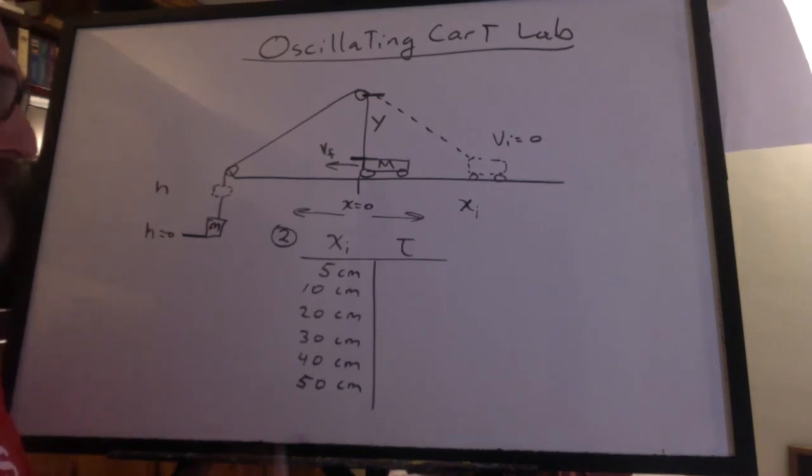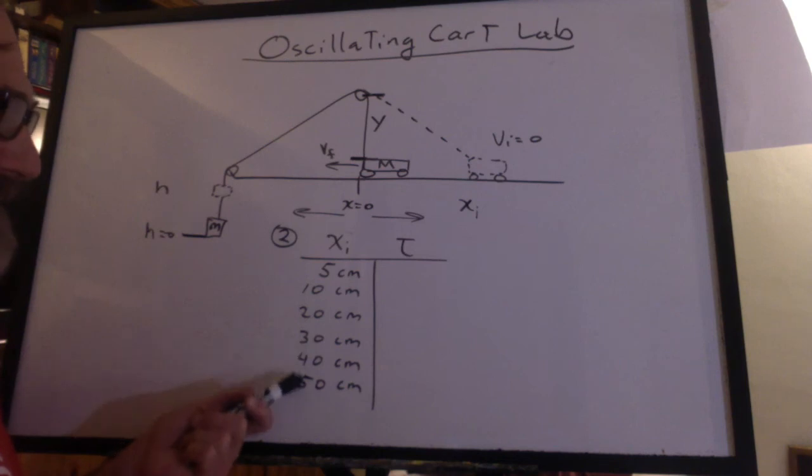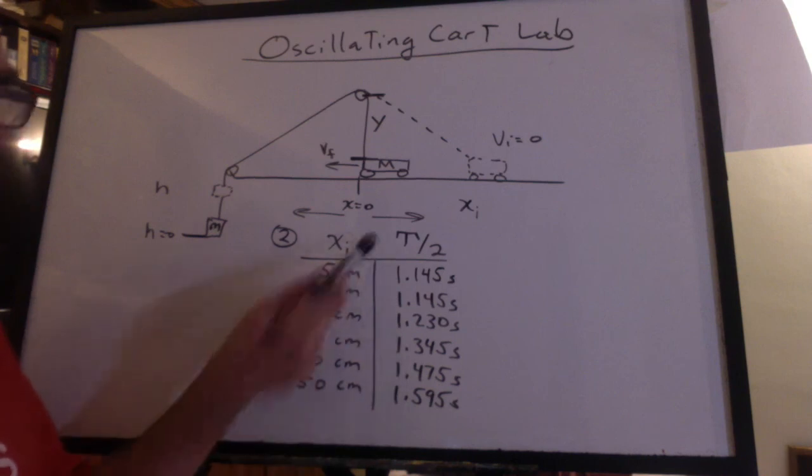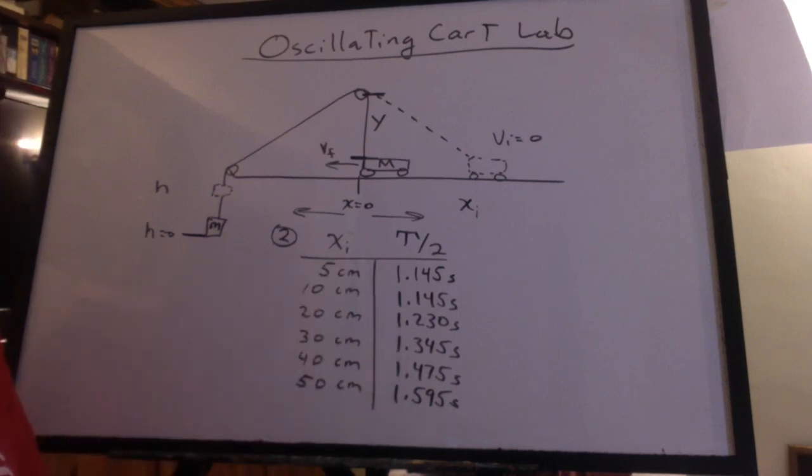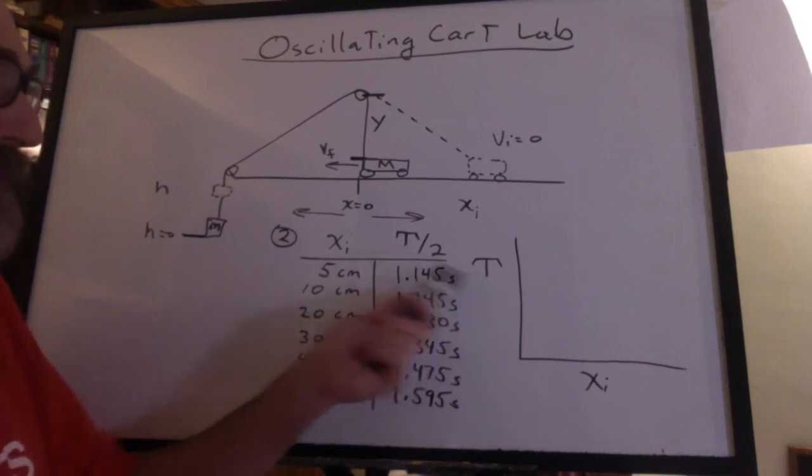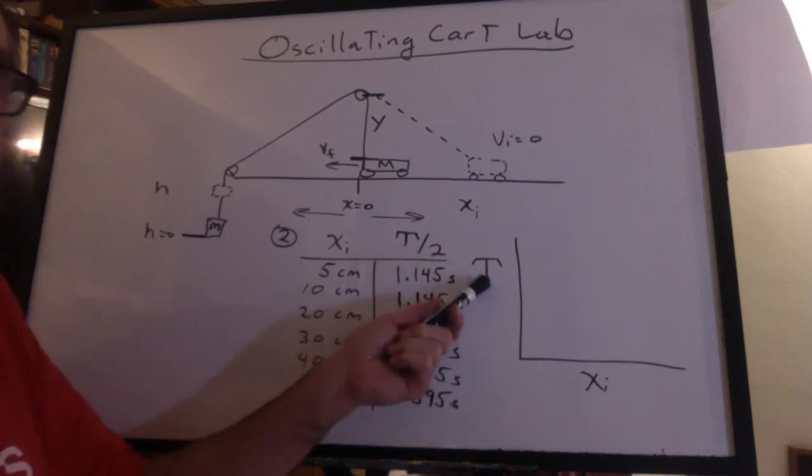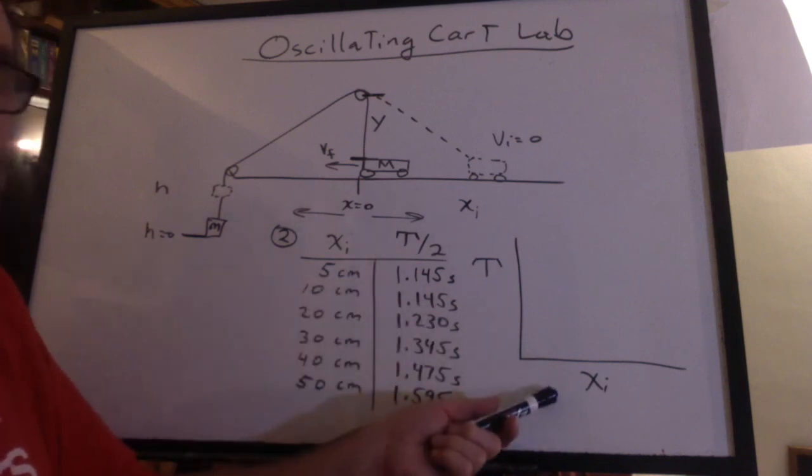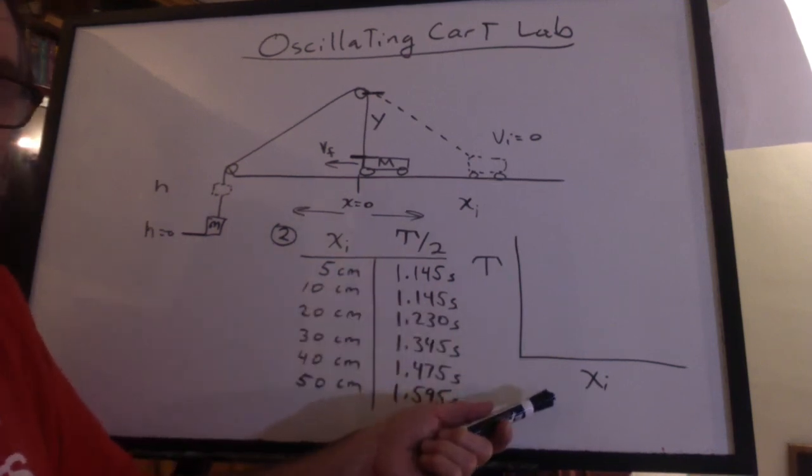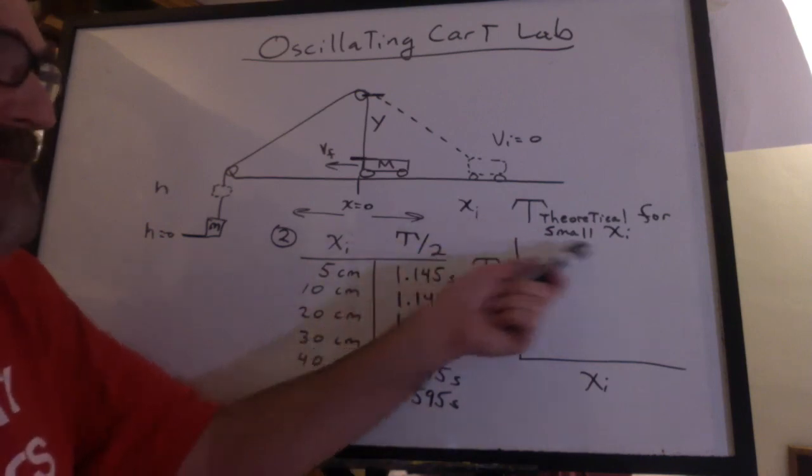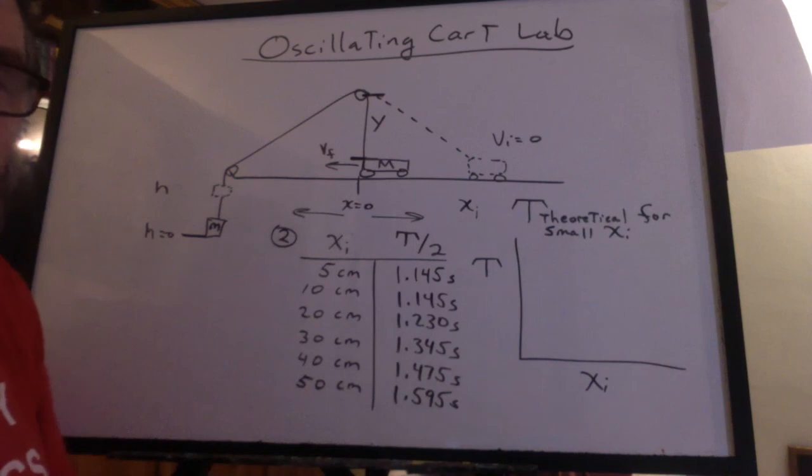In the second part of the lab, we pulled the cart back and release it from rest from these distances. And these were the times for half a period of oscillation. You should graph the experimental period, not period over two, graph the experimental period versus the release distance xi, which is the amplitude. And then plot a theoretical period for a small amplitude, a small initial displacement.